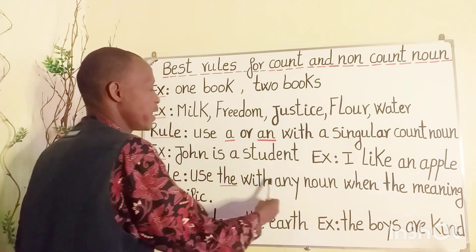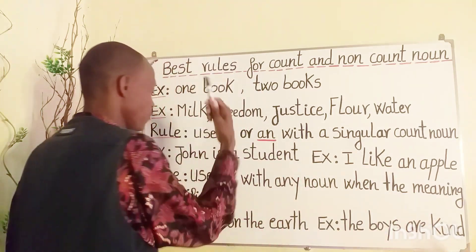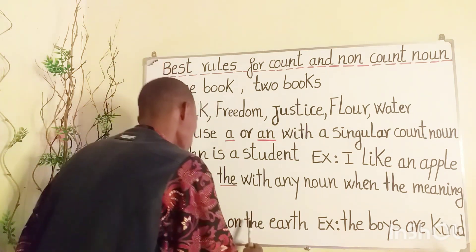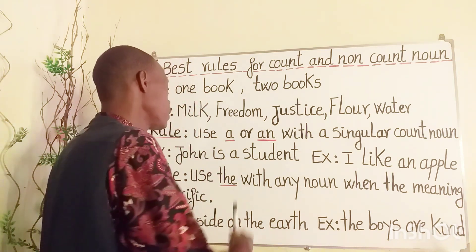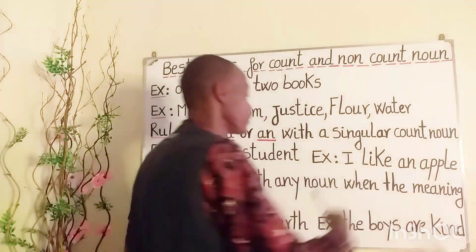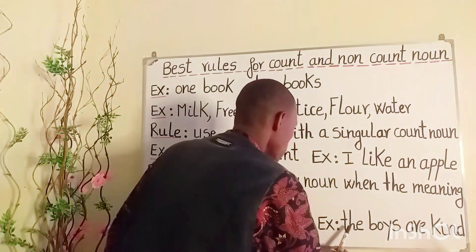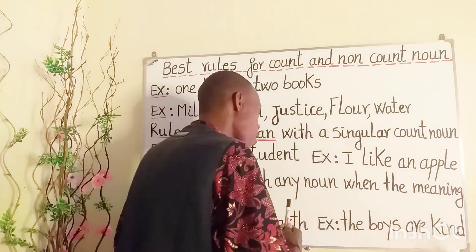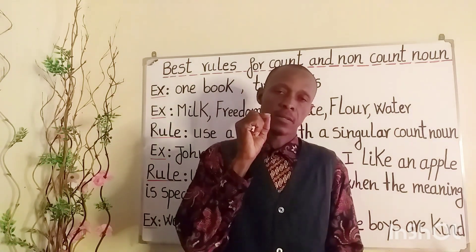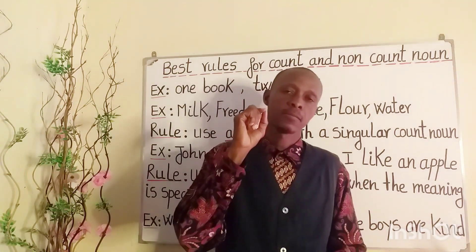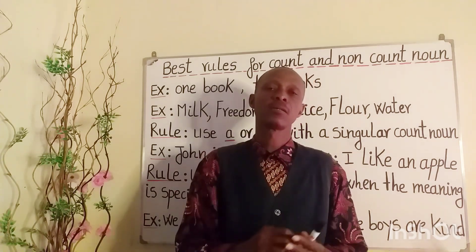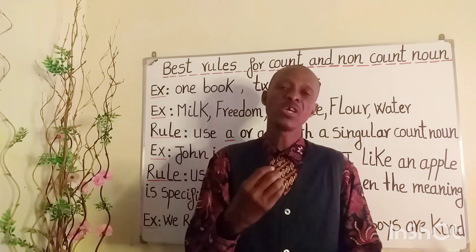Move on to rule number two: use 'the' — sometimes pronounced 'thee' — with any noun when the meaning is specific. Examples: 'We reside on the earth.' As you can notice, it is pronounced 'thee' because it is before the vowel 'e'. Next example: 'The boys are kind.' It is pronounced 'thuh' because it is before the consonant 'b'.